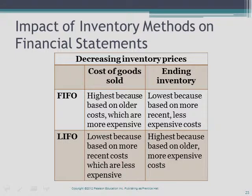When inventory prices are decreasing, FIFO results in the highest cost of goods sold because it uses older, yet more expensive costs, resulting in lower gross profit and lower net income. On the balance sheet, FIFO results in a lower inventory balance because it represents recent and less costly purchases. For LIFO, cost of goods sold is lowest because it is based on less expensive recent costs, resulting in higher gross profit and net income, and a higher inventory balance on the balance sheet because it is made up of older, more expensive items.